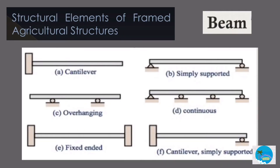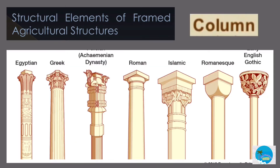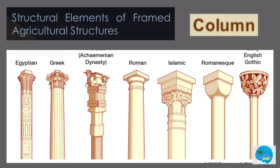Structural elements of framed agricultural structures. Beam: a long straight structure that is loaded perpendicular to its longitudinal axis. Column: a member vertically erected that resists compressive and axial loads. Arc: a curved structural shape that is usually configured to support gravity loads.